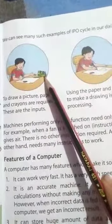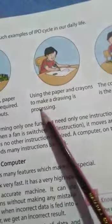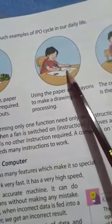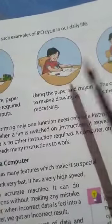Next one is using the paper and crayons to make a drawing is processing. That he starts making drawing with the help of crayons is called processing.